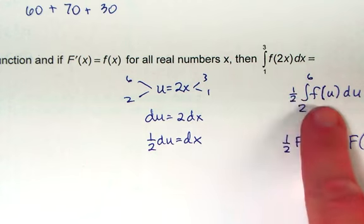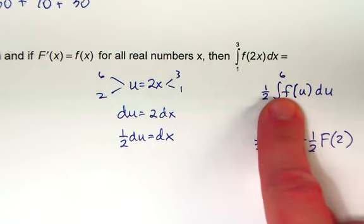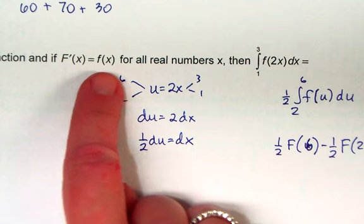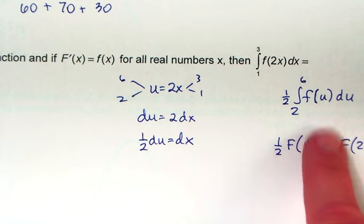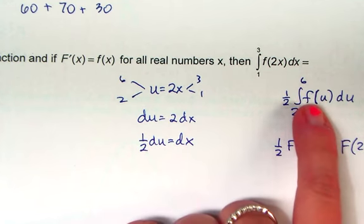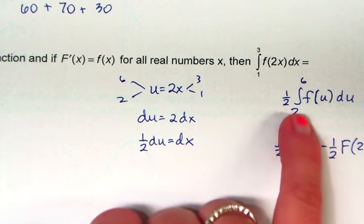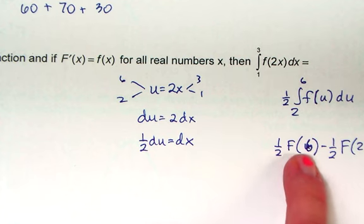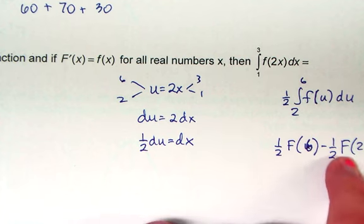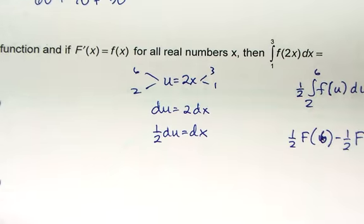So this is the equivalent rewrite right here. And the reason they tell you this is so that you can find the antiderivative of f. So the antiderivative of little f is big f. So we have 1 half big f of 6 minus 1 half big f of 2. That's the fundamental theorem, and so that would be e.